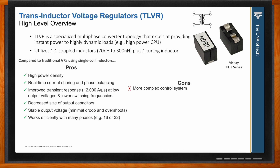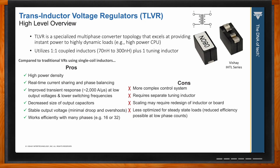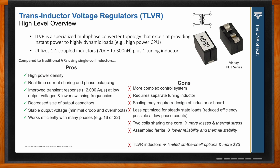As for disadvantages, TLVRs often require more complex control schemes, a separate tuning inductor, and scaling may require a board spin. Since these converters are optimized for transient response, converter efficiency may be about 4% lower at steady-state loads. The assembled ferrite construction and two coils sharing one core could also negatively impact reliability and increase thermal stress on the inductor.